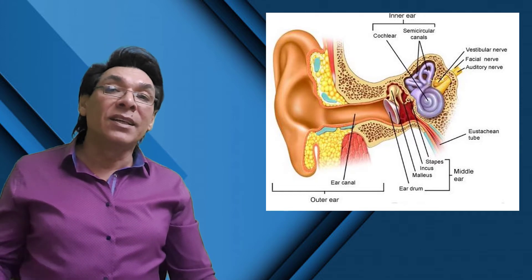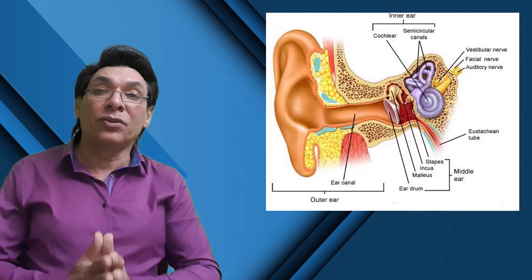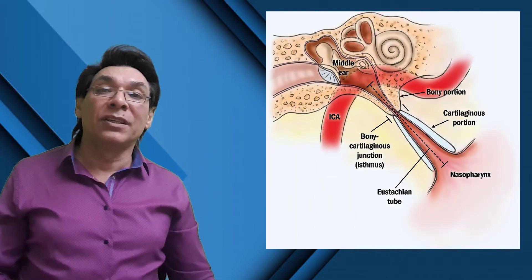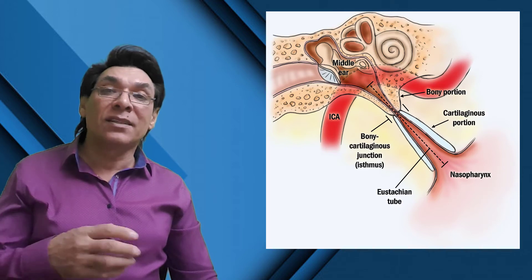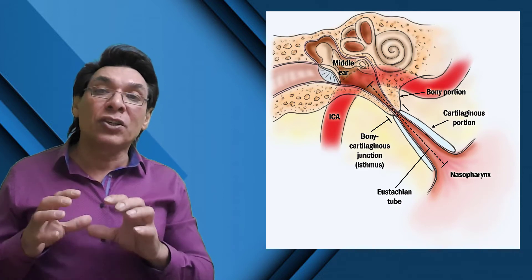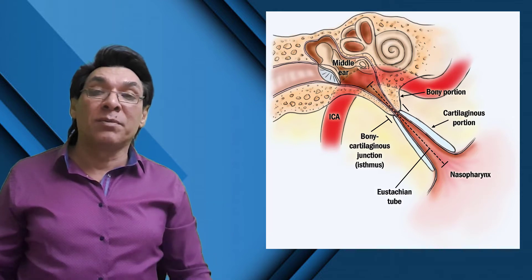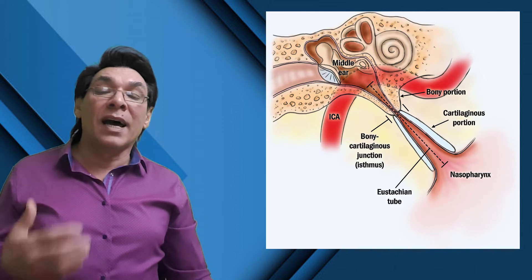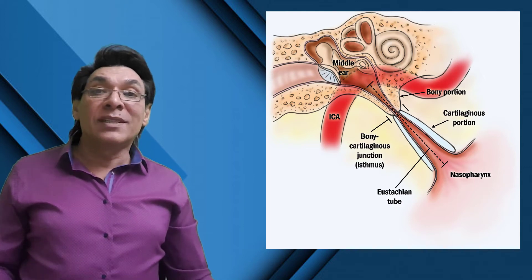The Eustachian tube, or auditory tube, connects the tympanic cavity (middle ear cavity) to the nasopharynx. It helps maintain equal pressure on both sides of the tympanic membrane. It is usually closed by valve-like flaps in the throat.